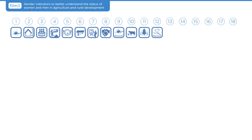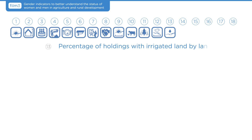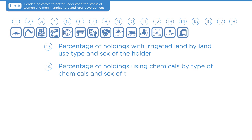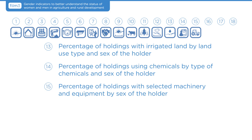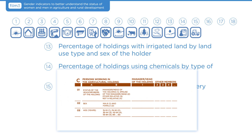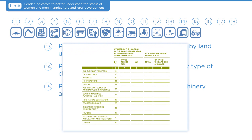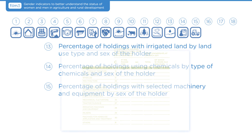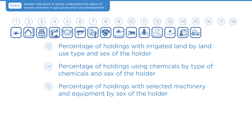Continuing with the list of indicators: 13. Percentage of holdings with irrigated land by land use type and sex of the holder. 14. Percentage of holdings using chemicals by type of chemicals and sex of the holder. 15. Percentage of holdings with selected machinery and equipment by sex of the holder. These resources are important for agricultural productivity, and women's lack of access to them contributes to the underperformance of agriculture. The modules shown here were extracted from the Agricultural Census Questionnaire for the Republic of Moldova. Table 1 shows demographic data on the human capital of the agricultural holder, while Table 2 demonstrates ownership of different types of equipment and machinery. Disaggregation by sex of the holder allows us to understand differences in ownership of machinery between women and men.